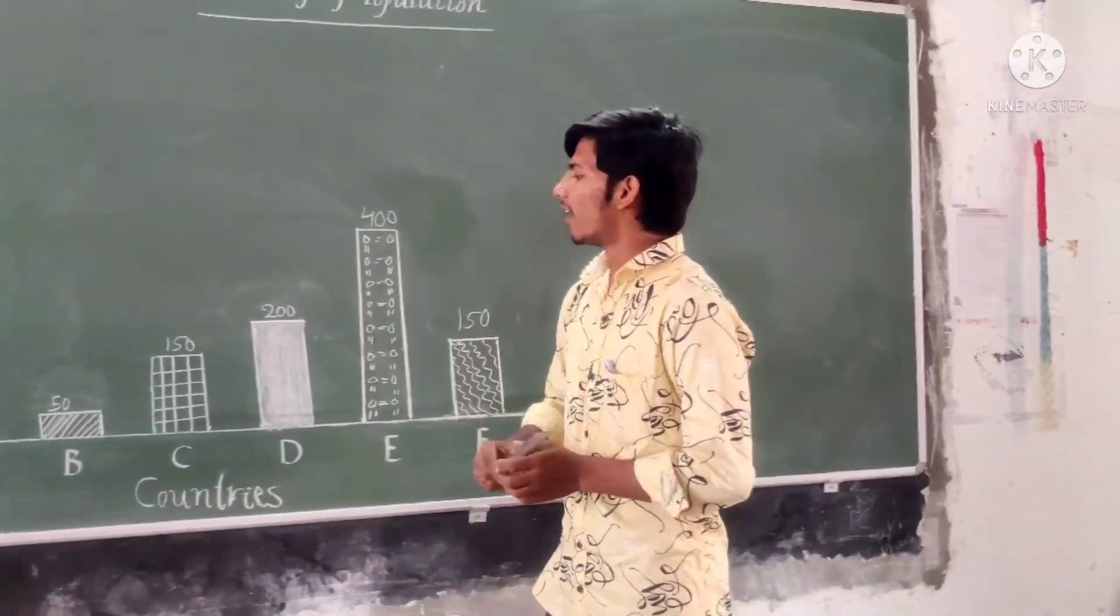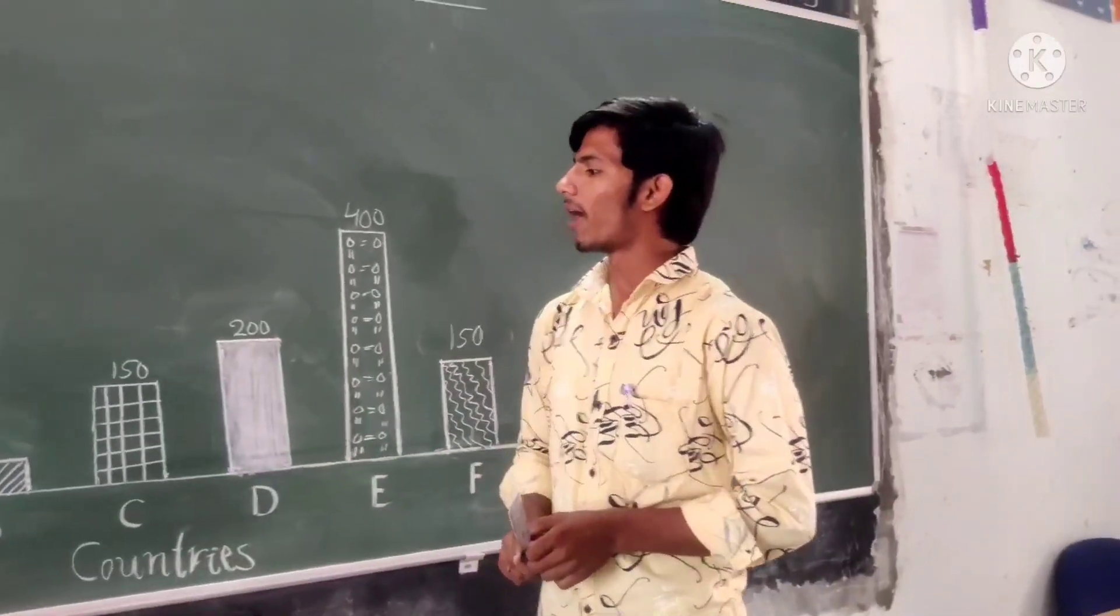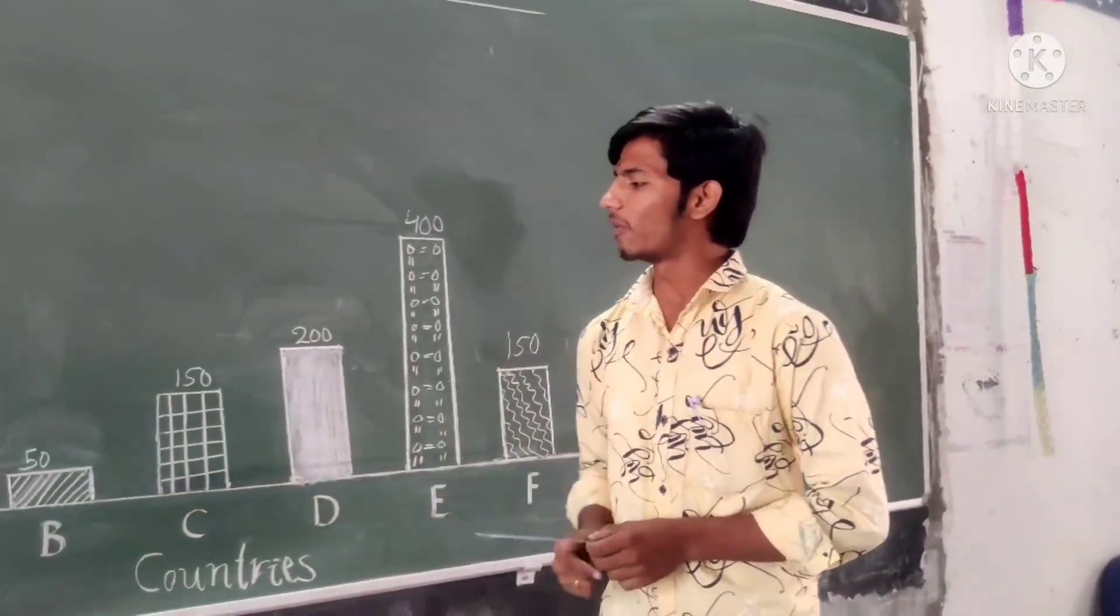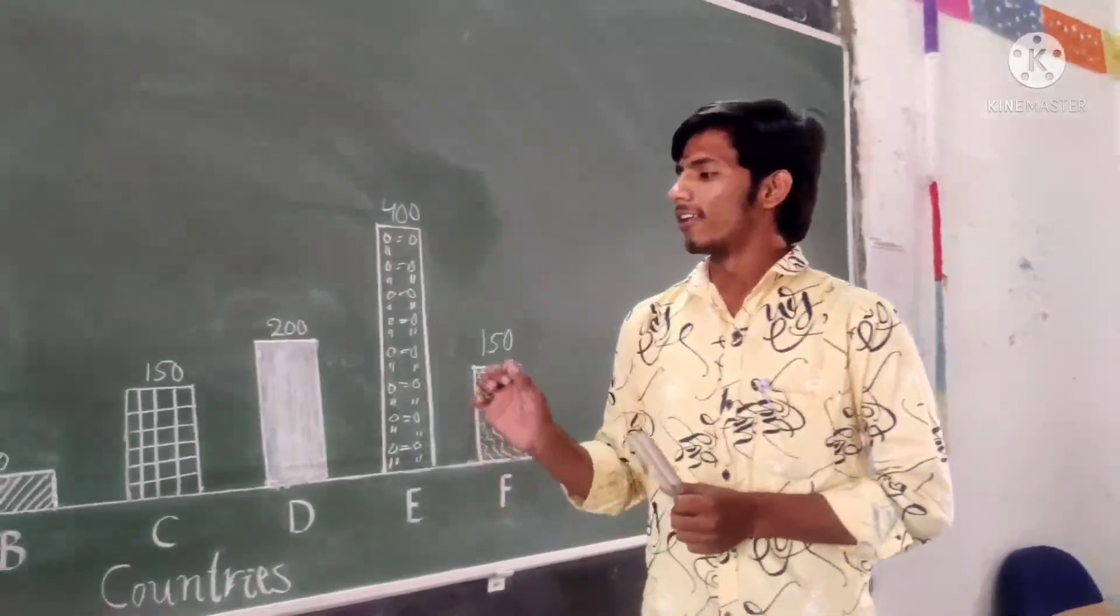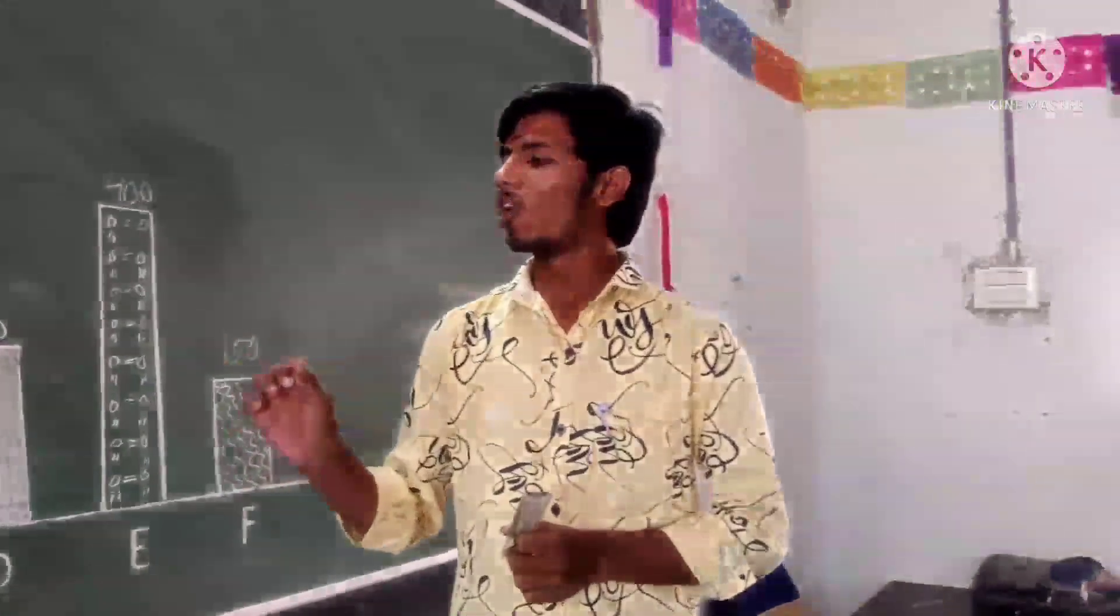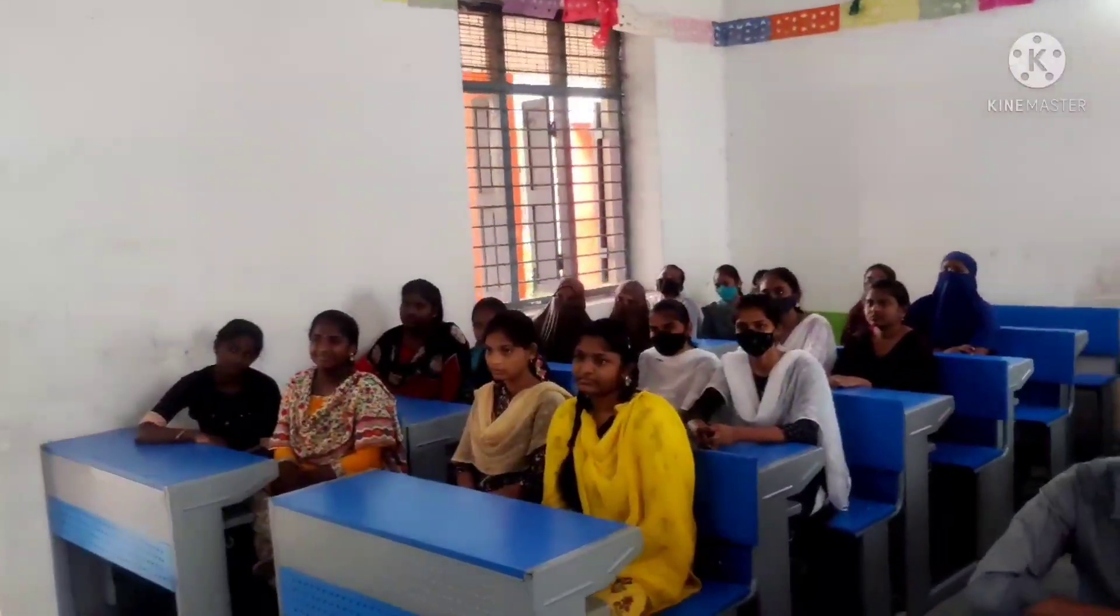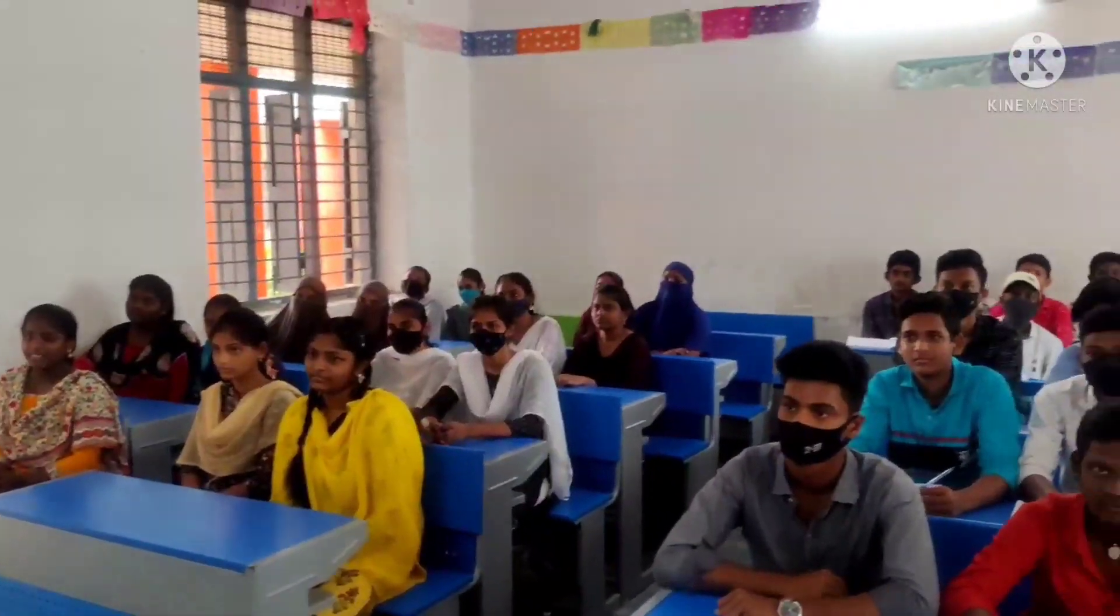And the lowest bar is occupied by country B. What do we observe here? It means the lowest number of people. That is 50 people live here per 100 square kilometers.